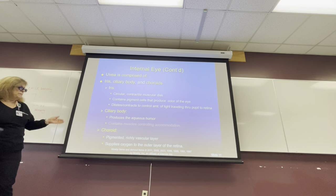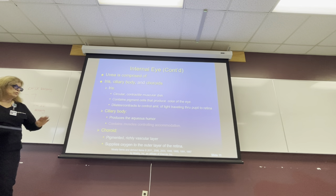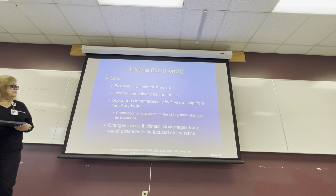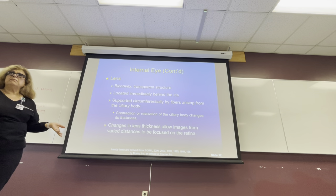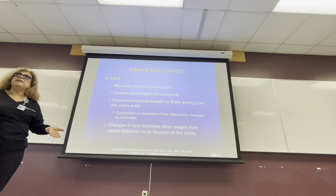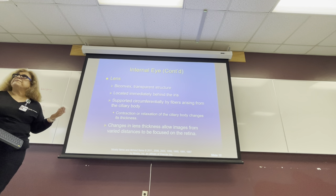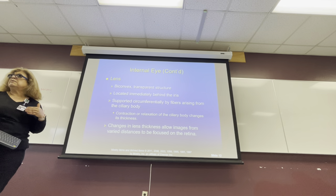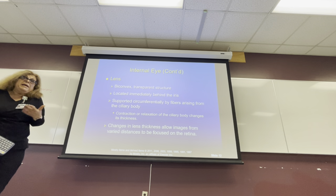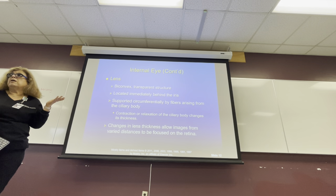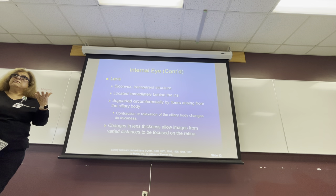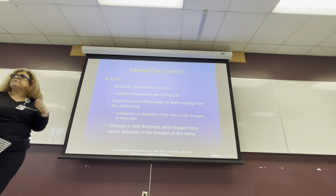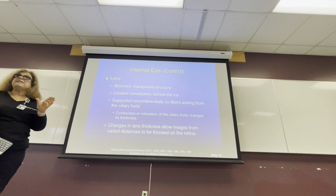The choroid is a pigmented richly vascular layer that supplies oxygen to the outer layer of the retina. The only thing I want you to know about the lens is that it needs to be clear for us to see clearly. Can it become opaque? Yes. If there is opacity, who translates it? The cornea. How do you look? From the side with a pen light. The milkiness of the cornea is a translation of the lens being opaque.